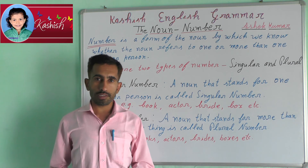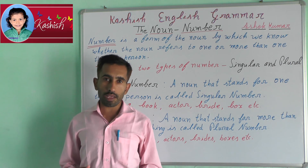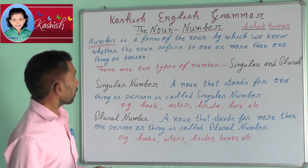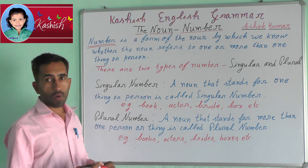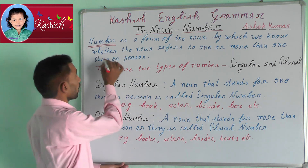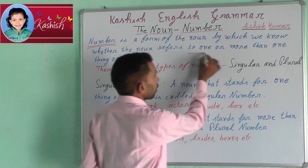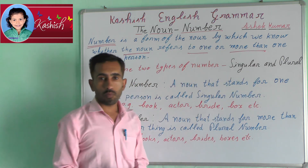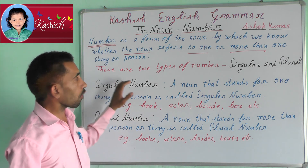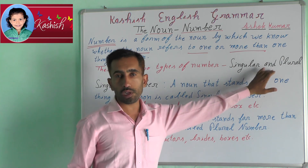Welcome to Kashi's English Grammar Lesson. Now we will learn about the number. Number is a form of a noun by which we know whether the noun refers to one or more than one thing. There are two types of number: singular and plural.